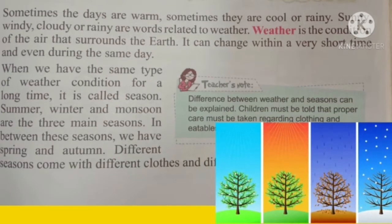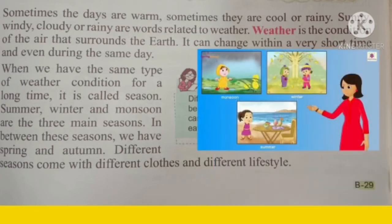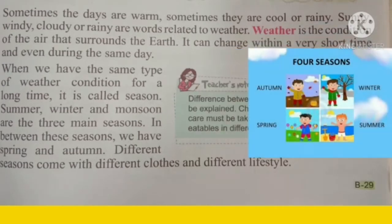When we have the same type of weather condition for a long time, it is called a season. जब एक लंबे समय तक weather की condition same रहती है, तो उसे season बोलते हैं. Summer, winter and monsoon are the three main seasons. In between these seasons we have spring and autumn. Different seasons come with different clothes and different lifestyle.